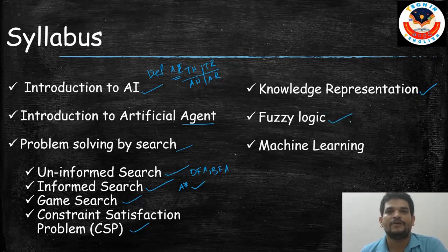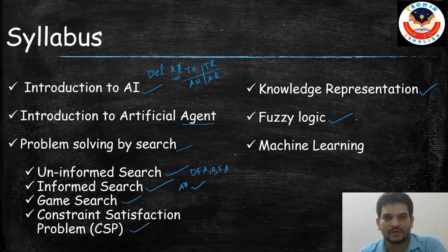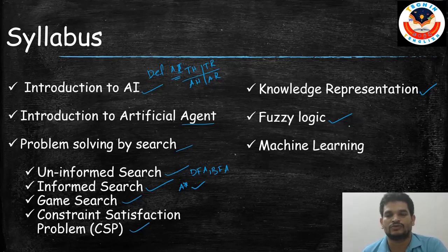Next we have Fuzzy Logic. In fuzzy logic, we will cover fuzzy sets, operations on fuzzy sets, alpha cut, and all related topics.